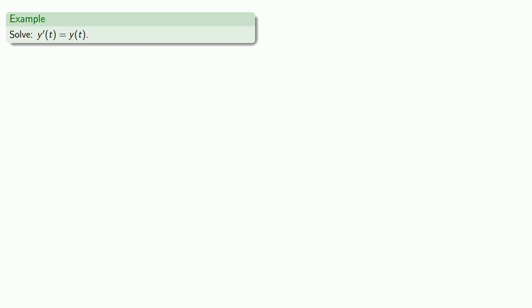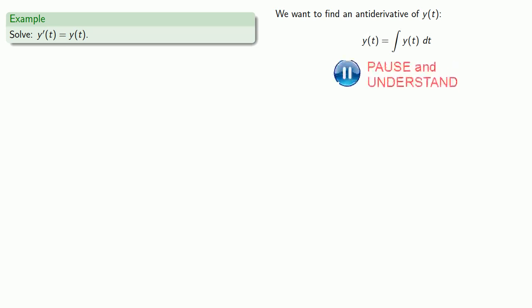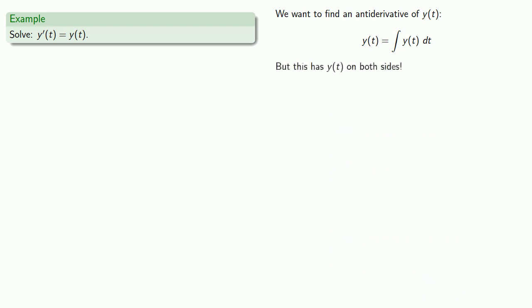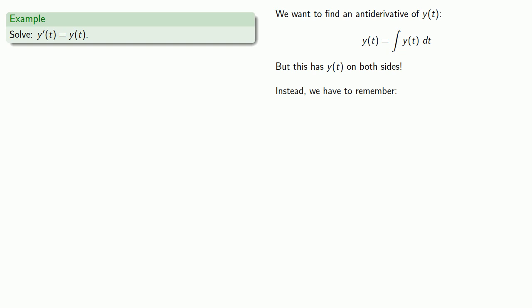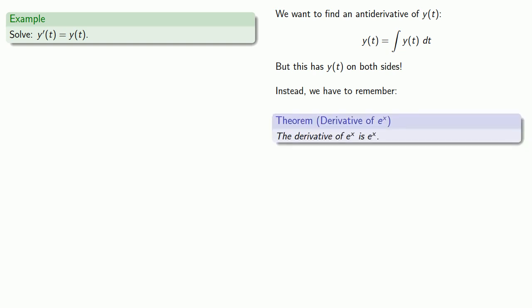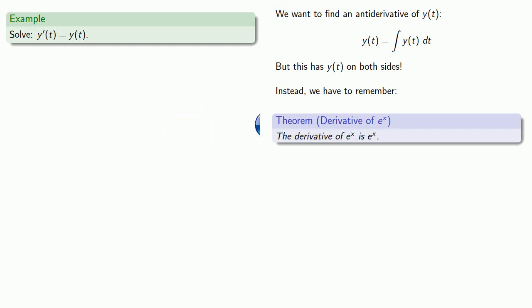Let's try to solve y prime of t equals y of t. We might proceed by finding an antiderivative of y of t, but this has y of t on both sides, so it's not entirely clear how to solve this. Instead, we have to remember an important derivative: the derivative of e to the x is e to the x. So we might let y of t equal e to the t.